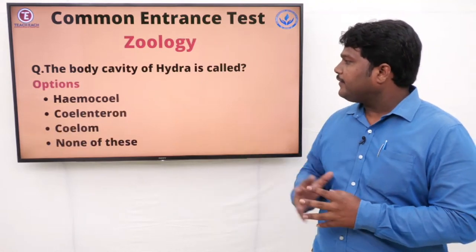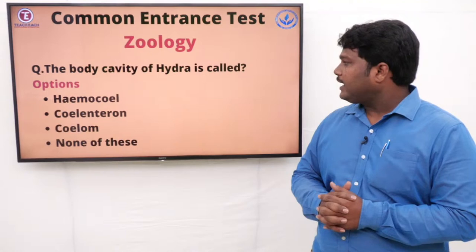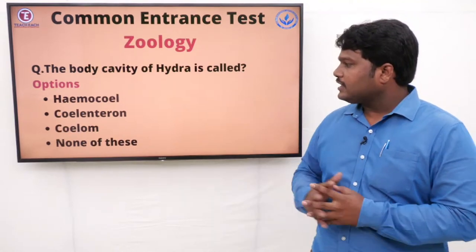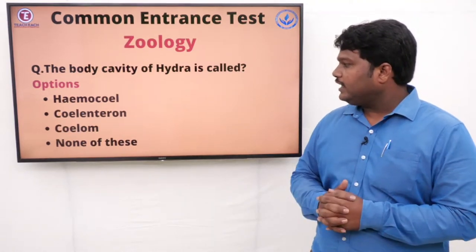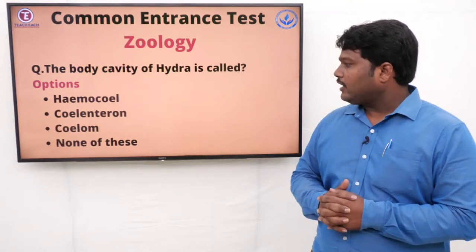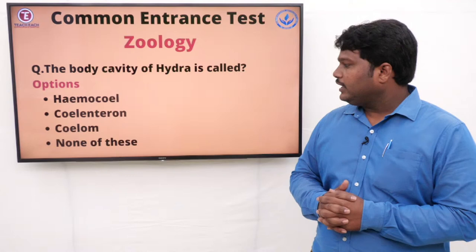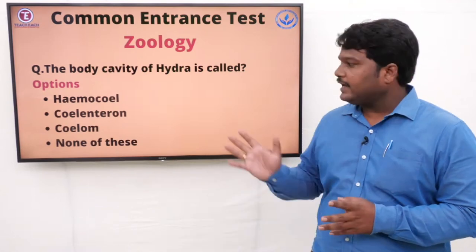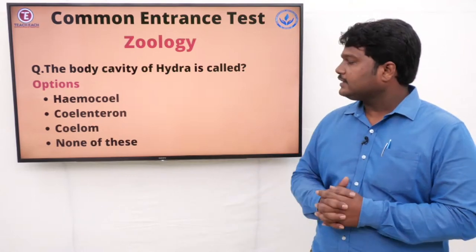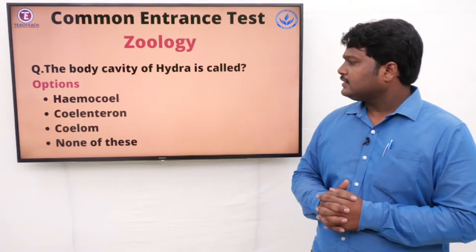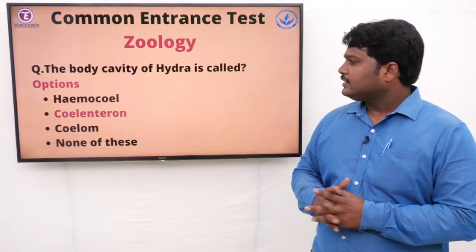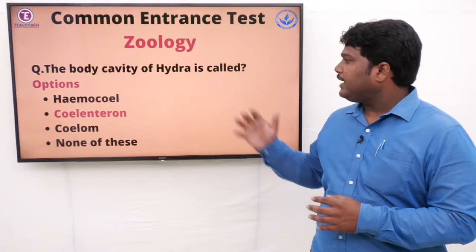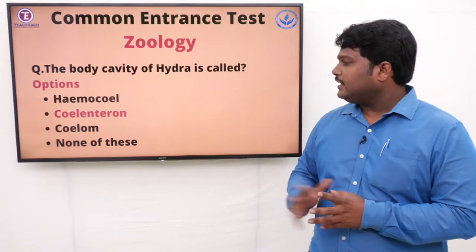Question 14: The body cavity of Hydra is called. Options: A) Haemocoel, B) Coelenteron, C) Coelom, D) None of these. The right option is Coelenteron. The body cavity of Hydra is the Coelenteron.